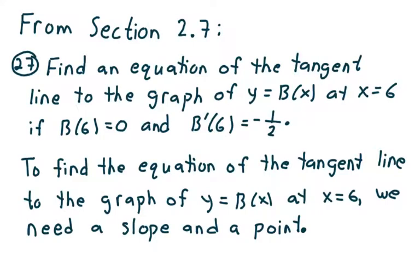This is a video from section 2.7. We're going to look at problem 27, from the calculus textbook by Stewart, 9th edition. It says: find an equation of the tangent line to the graph of y equals b of x at x equals 6, if b of 6 equals 0 and b prime of 6 equals negative one half.